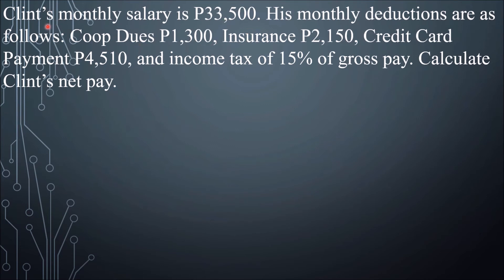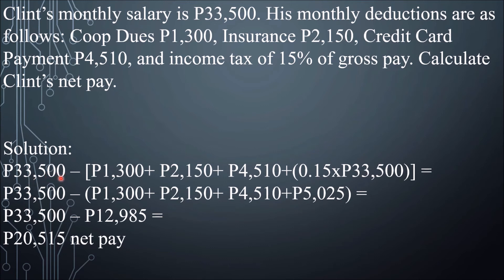Next example: Clint's monthly salary is 33,500 pesos. His monthly deductions are: co-op dues 1,300; insurance 2,150; credit card 4,510; and income tax of 15% of gross pay (15% of 33,500 = 5,025). Total deductions = 1,300 + 2,150 + 4,510 + 5,025 = 12,985. Net pay = 33,500 − 12,985 = 20,515 pesos.